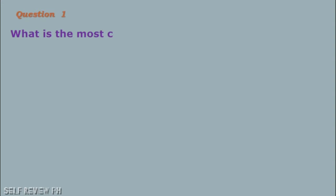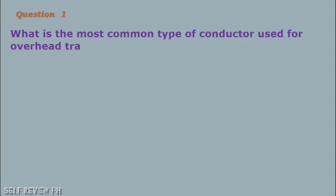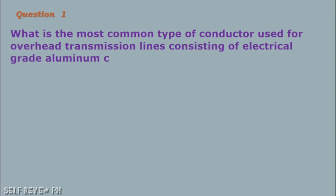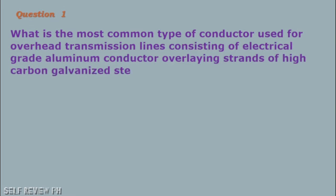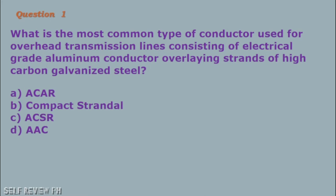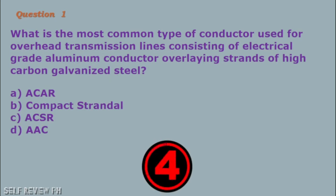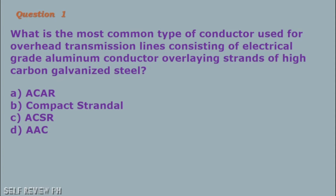Question number 1: What is the most common type of conductor used for overhead transmission lines consisting of electrical-grade aluminum conductor overlaying strands of high-carbon galvanized steel? A. ACSR B. Compact stranded C. ACSR D. AAC. The correct answer is letter C, ACSR.